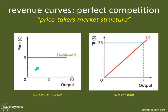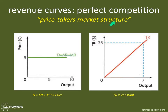The reason this distinction matters is that the revenue curves look very different in the price takers market structure than in the price makers market structure. In perfect competition, firms operating in that market structure must behave a certain way — just like the structures you operate in as a human dictate your behavior. When you're at school, with friends, or with family, you behave differently. Similarly, firms behave differently in different market structures.